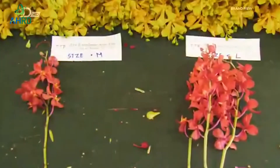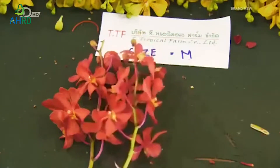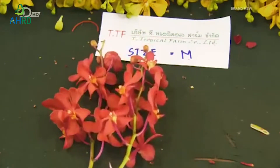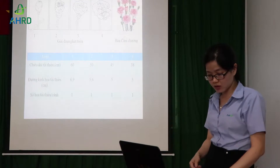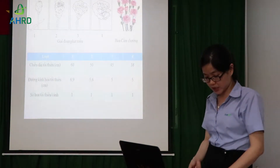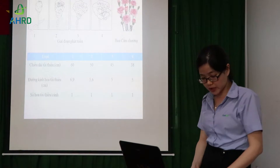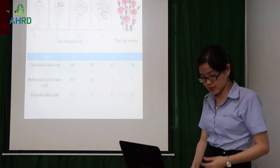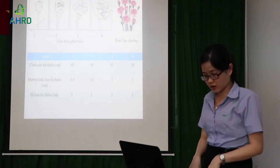Hoa sau khi được thu hoạch sẽ được mang về sân phân dưỡng để phân loại. Mục đích của quá trình phân loại là nhằm phân hẹn được những hoa có cùng kích thước, loại bỏ những hoa bị dập, bị gáy trong quá trình thu hoạch, và không nên để lẫn lộn những hoa bị dập nát sâu bệnh với các cánh hoa khác để tránh sự nhiễm chéo.